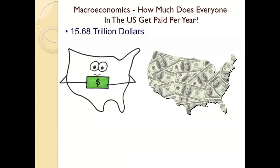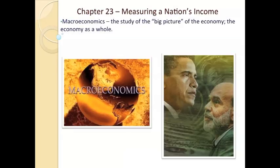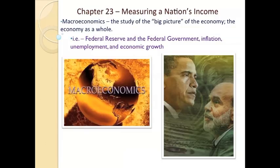A micro question would be, how much does Coachella make in a year? A macro level question would be, how much does the entire United States get paid per year? Chapter 23 is titled Measuring a Nation's Income. When we look at macroeconomics, and this is the focus of our course, we study big picture things, the economy as a whole. We study things like the Federal Reserve and the federal government — those are the two major players in the macroeconomy. We study things like inflation, unemployment, economic growth, and we look at other indicators to show us what and how the economy is doing at any given time.